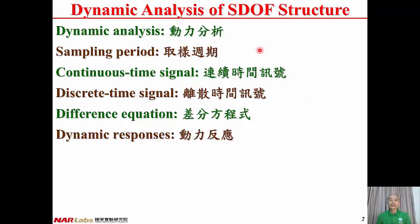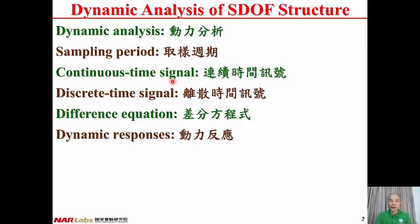Here are some terminology. Dynamic Analysis — in Chinese, Dong Li Fenxi. Sampling Period is the interval between two sampling data — in Chinese, Chu Yang Zhou Qi. Continuous Time Signal: if the signal is continuous and varies continuously with time, then we call it Continuous Time Signal — in Chinese, Lian Xu Shijian Shunhao.